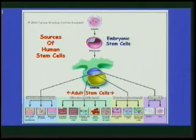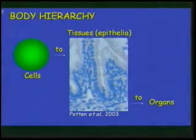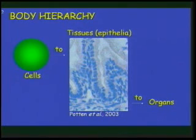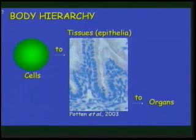Everybody has adult stem cells — in your brain, in your skin. Pretty much all of our mature tissues have associated with them a specialized cell called an adult stem cell. Although our bodies are made up of trillions of cells, those cells are organized into what we call tissues. Tissues, for example, would be skin. In some cases, those tissues are organized to form organs like our heart or liver — so there's a hierarchy from small to larger organization. Pretty much every type of tissue has stem cells.